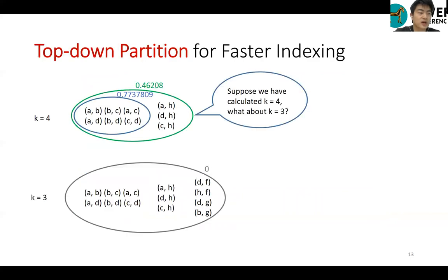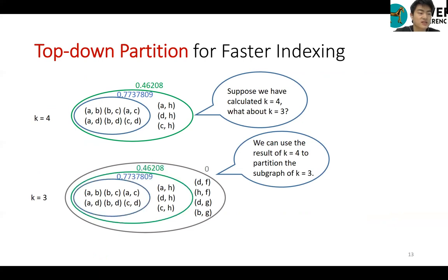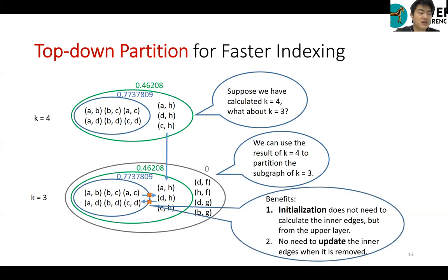Now we introduce a top-down partition technique used in algorithm 2. Suppose we have calculated k equals 4. What about k equals 3? We can use the result of k equals 4 to partition the subgraph of k equals 3. The benefits are initialization does not need to calculate the inner edges but from the upper layer, and no need to update the inner edges when removed.